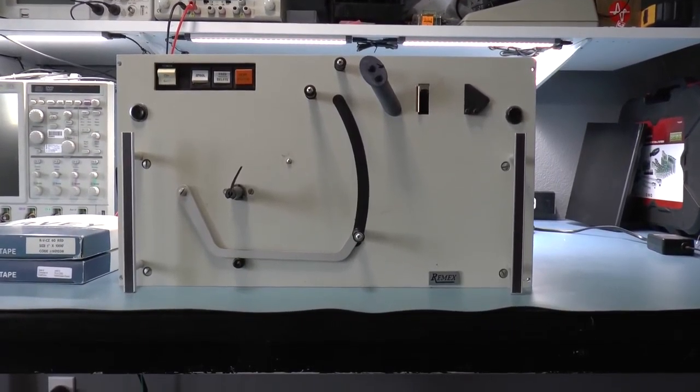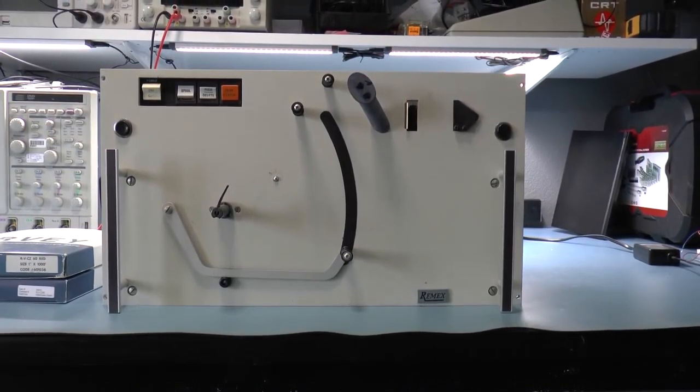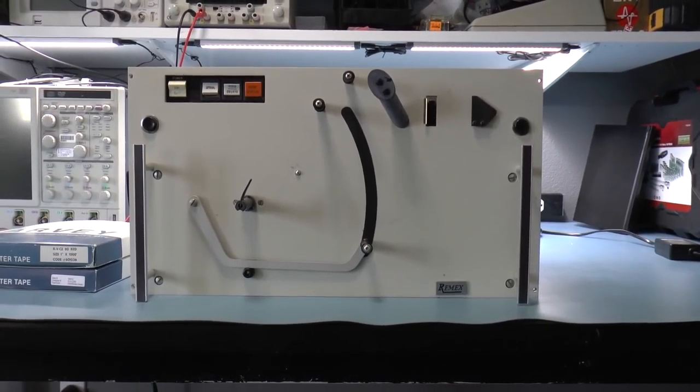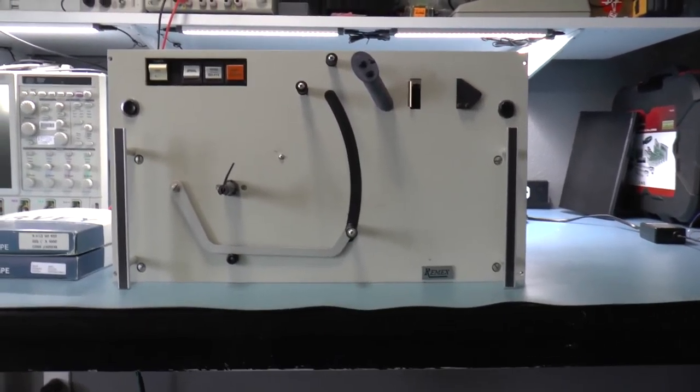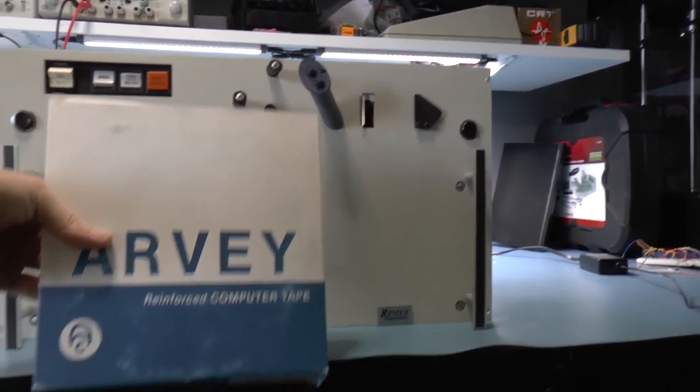Greetings retro friends. This is a Remex punch tape punch machine. It punches tape - computer tape. Not magnetic tape, but paper-like tape.